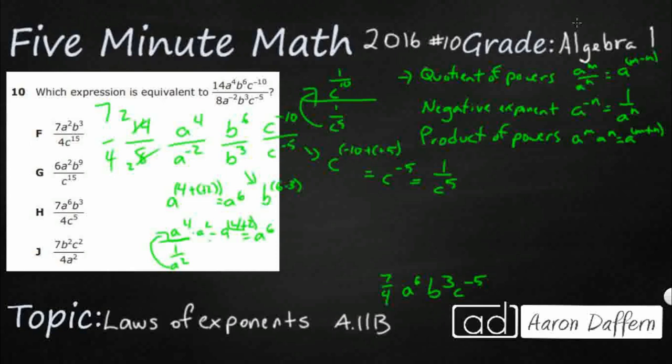Since they're both fractions, they end up flipping spots, and it ends up being C to the fifth over C to the tenth, and that's why we end up with 1 over C to the fifth, or C to the negative 5.